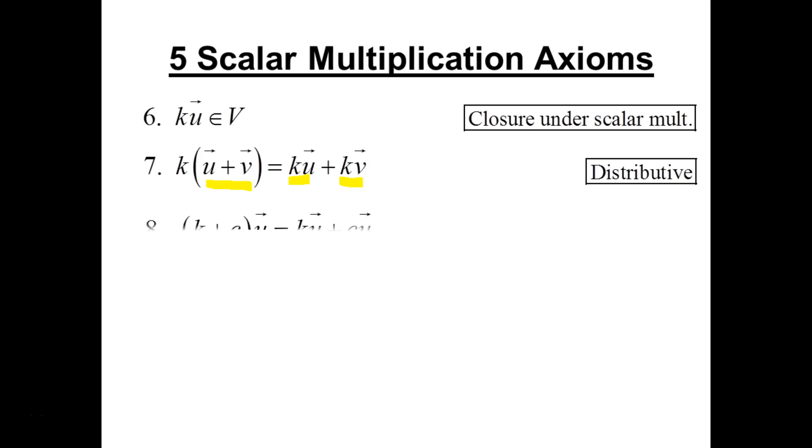Number eight. Now I'm adding two scalars together. Remember K and C are scalars. I'm adding two scalars first and that result then will be used to scale the vector U. You can instead scale the vector U by the one scalar, scale the vector U by the other scalar, and then add. So it's another kind of a distributive property. This time you're distributing over a scalar sum. You're distributing the scalar multiplication of your vector U.